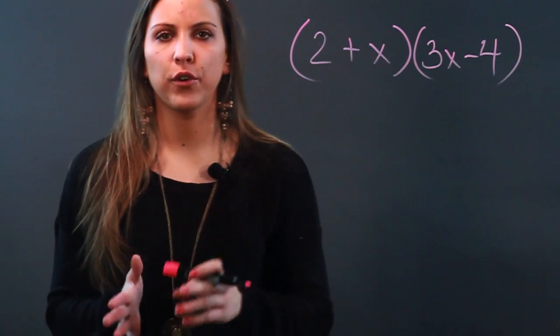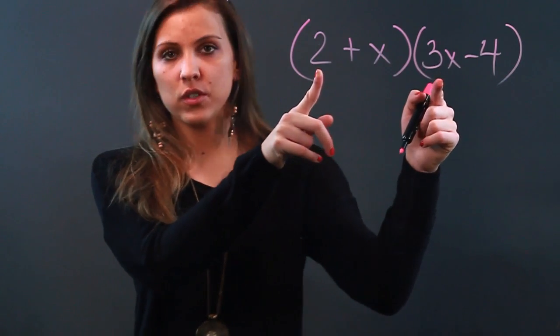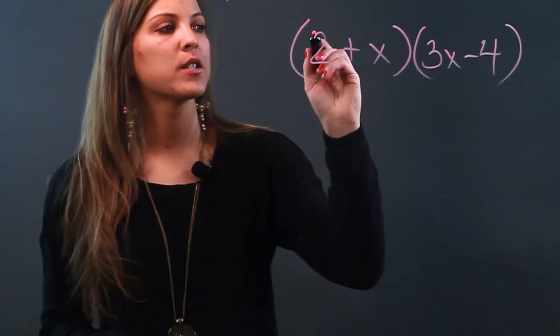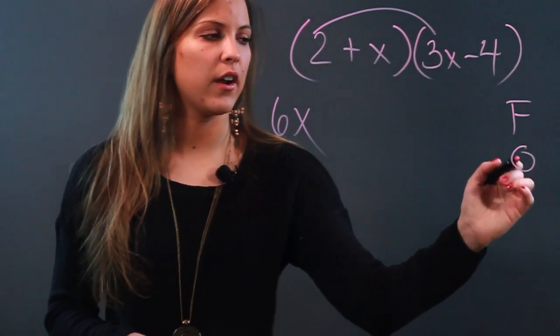So FOIL stands for First, Outer, Inner, Last, meaning that I'm taking the first term in this parentheses and the first term in this parentheses and multiplying them. So I have 2 times 3x, which is 6x. So that's our F.